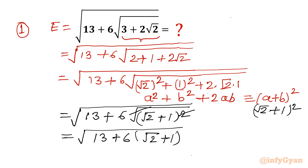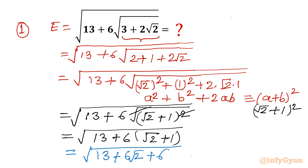Let's expand. So I will write 13 plus 6 times (root 2 plus 1), which becomes 13 plus 6 times root 2 plus 6. Further simplifying, 13 plus 6 equals 19, so we get square root of 19 plus 6 times square root 2. Now it is in a more simplified form.